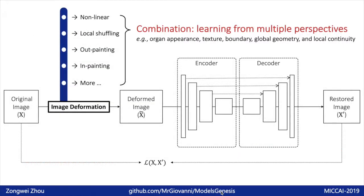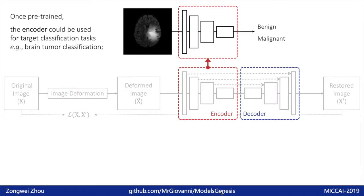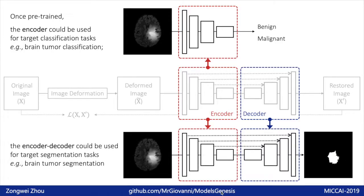We combine these four deformations together to let the model learn from multiple perspectives. Our ablation study shows that the combined approaches perform more robustly compared with each individual. Our self-supervised learning framework is scalable because it is easy to incorporate any other meaningful image deformations. After pre-training, the encoder can be used for target classification tasks and the encoder-decoder together for target segmentation tasks.